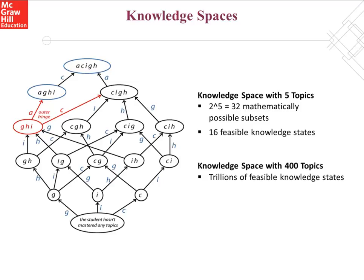All of the feasible knowledge states for a given subject are organized into what we call a knowledge space. Let's look at a simple example of a course with only five topics: A, C, I, G, and H.